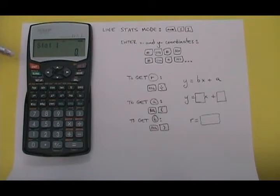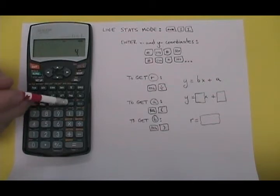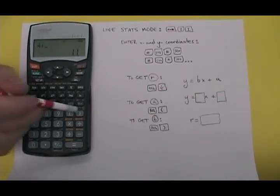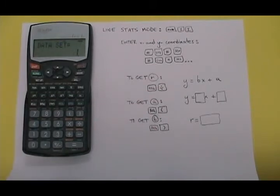The way I do that is I enter the first number, the 4, and then I enter the STO button. Then I enter the 11, and I enter the M plus button. It says data set equals 1, which means that I have entered the first set of x and y coordinates.